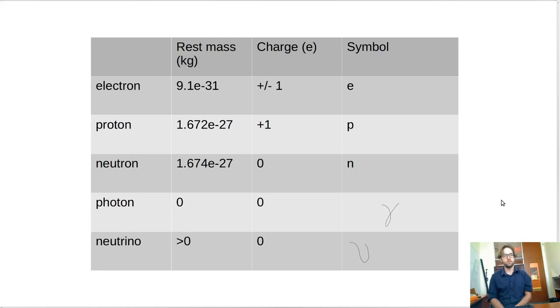So that's basically what the rest masses are for the kinds of particles that we'll be talking about in nuclear engineering. Now, a lot of what nuclear engineering is focused around is the neutron. But because of the way the nucleus is formed, we do care about things like protons and electrons and photons and neutrinos as well. And we'll get onto all of that this semester.